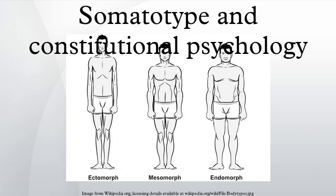There is evidence that different physiques carry cultural stereotypes. For example, one study found that endomorphs are likely to be perceived as slow, sloppy, and lazy. Mesomorphs, in contrast, are typically stereotyped as popular and hard-working. Ectomorphs are often viewed as intelligent but fearful, and usually take part in long-distance sports such as marathon running. Stereotypes of mesomorphs are generally much more favorable than those of endomorphs, while stereotypes of ectomorphs are somewhat mixed.